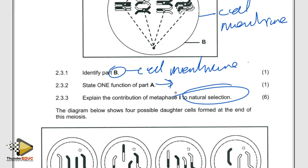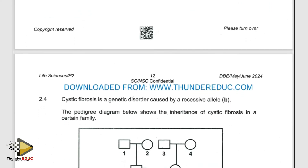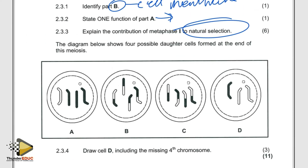Explain the contribution of metaphase one to natural selection. In this case they are looking at how metaphase one helps to bring about variation. Remember, variation is what helps us survive in the environment. So how does metaphase one bring about variation? That's what they are asking.